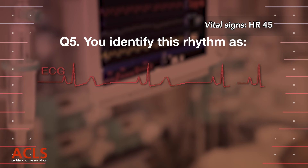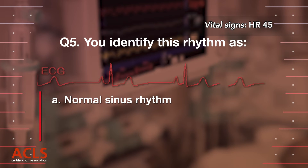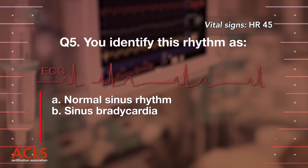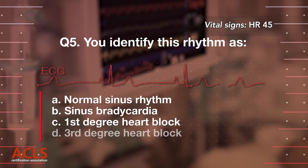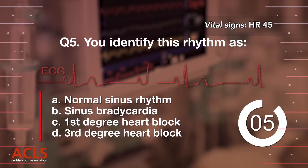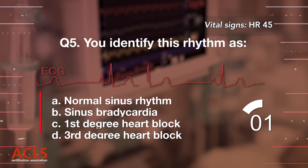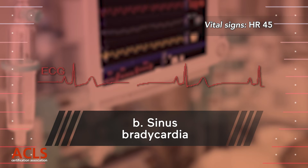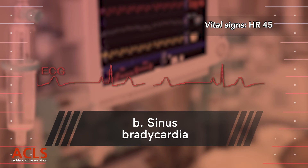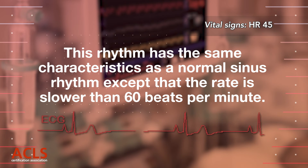Question 5: You identify this rhythm as: A. Sinus rhythm, B. Sinus bradycardia, C. First-degree heart block, D. Third-degree heart block. Correct answer: B. Sinus bradycardia. This rhythm has the same characteristics as sinus rhythm, except that the rate is slower than 60 beats per minute.